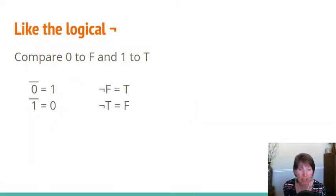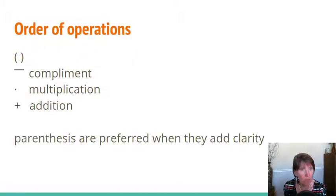It's much like the NOT operation - again, zeros for false, ones for true, and it works like that NOT operation. There are the same order of operations. Parentheses take precedence, and we use those to change the order of operations or to add clarity. Then comes the complement, which is applied next. After that is multiplication, followed by addition. As always, parentheses are preferred when they add clarity.